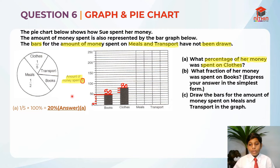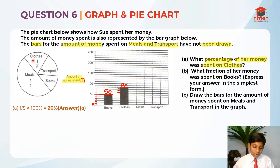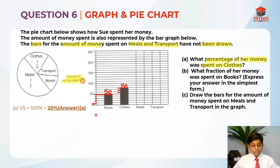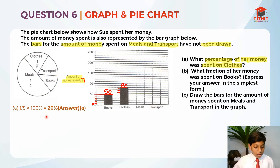For Part A we use the pie chart because we already have the fraction of clothes as one-fifth. We cannot use the bar graph to find the percentage because we do not have the total value — the meals and transport bars are not drawn, so we can't determine the total amount from the bar graph alone.